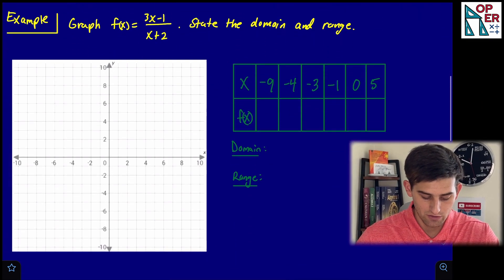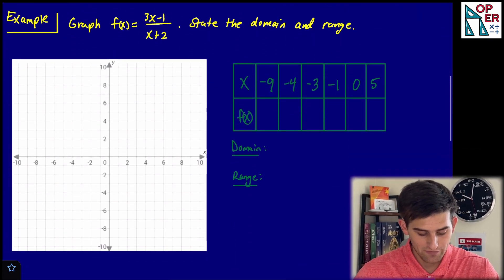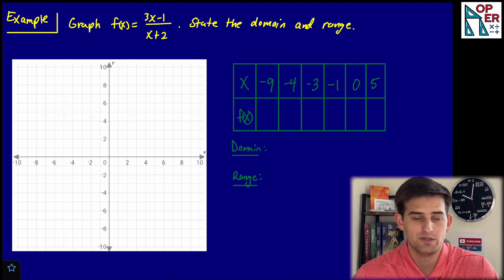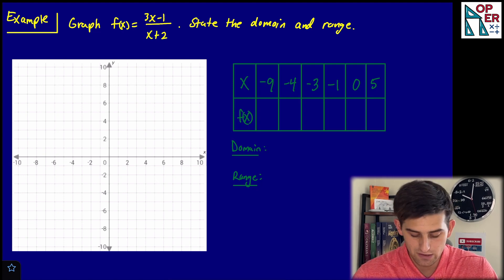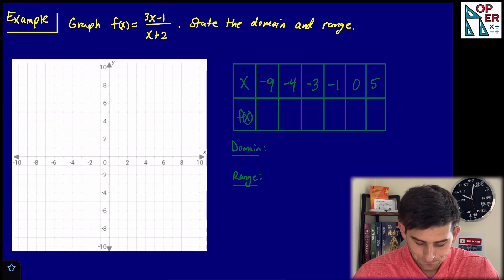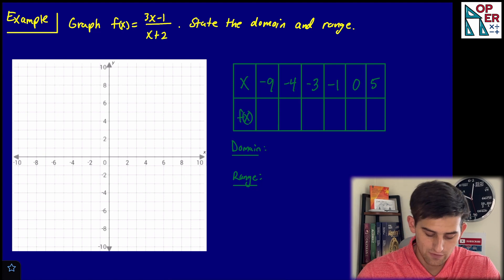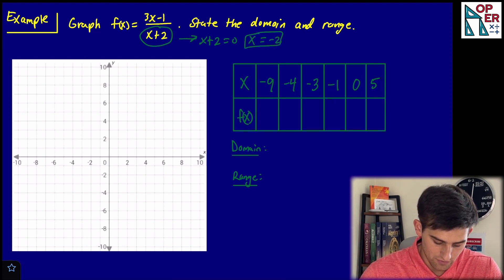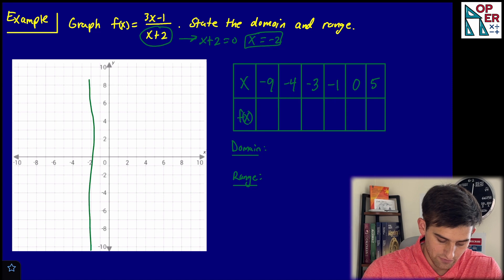Let's look at our example. We're going to graph f of x equals three x minus one over x plus two, then state the domain and the range. Step one: identify and draw the vertical and horizontal asymptotes. For the vertical asymptote, we have x plus two in the denominator. Setting that equal to zero gives us x equals negative two — that's our vertical asymptote.